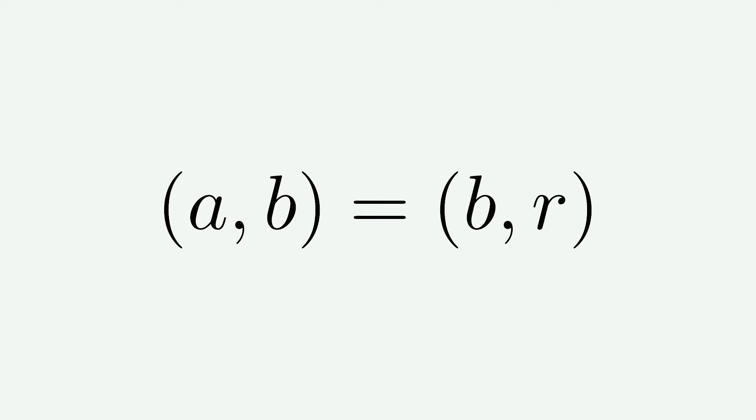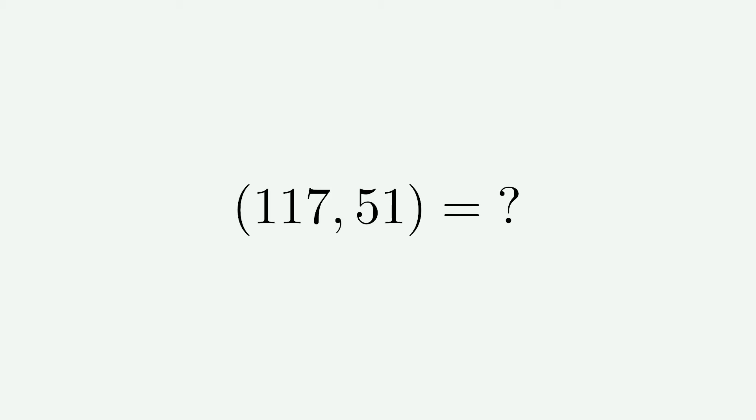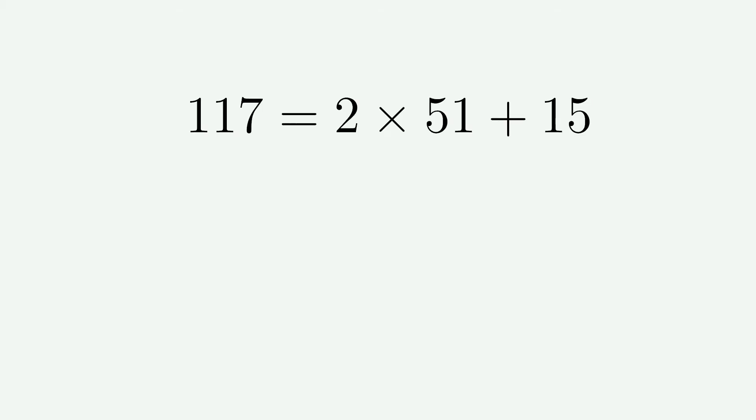But r is smaller than a, so if we iterate this process — well, it's a lot easier with actual numbers. Let's find the highest common factor of 117 and 51. We have 117 equals 2 times 51 plus 15, so q is 2 and r is 15. We know q is 2 since if we tried to increase it to 3, r would become negative, which isn't allowed. So the highest common factor of 117 and 51 is the same as the highest common factor of 51 and 15.